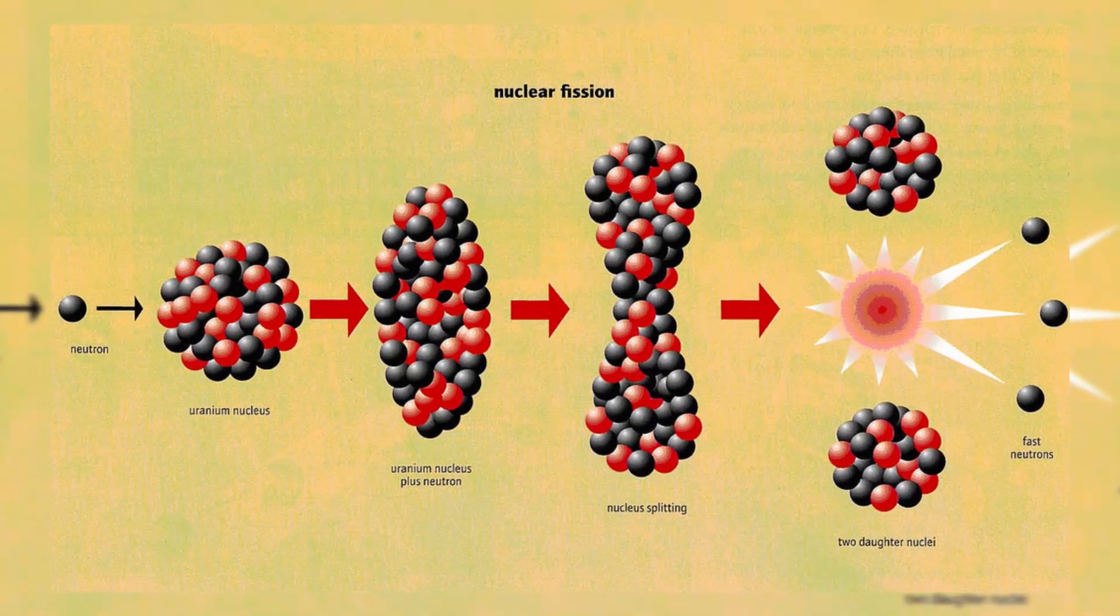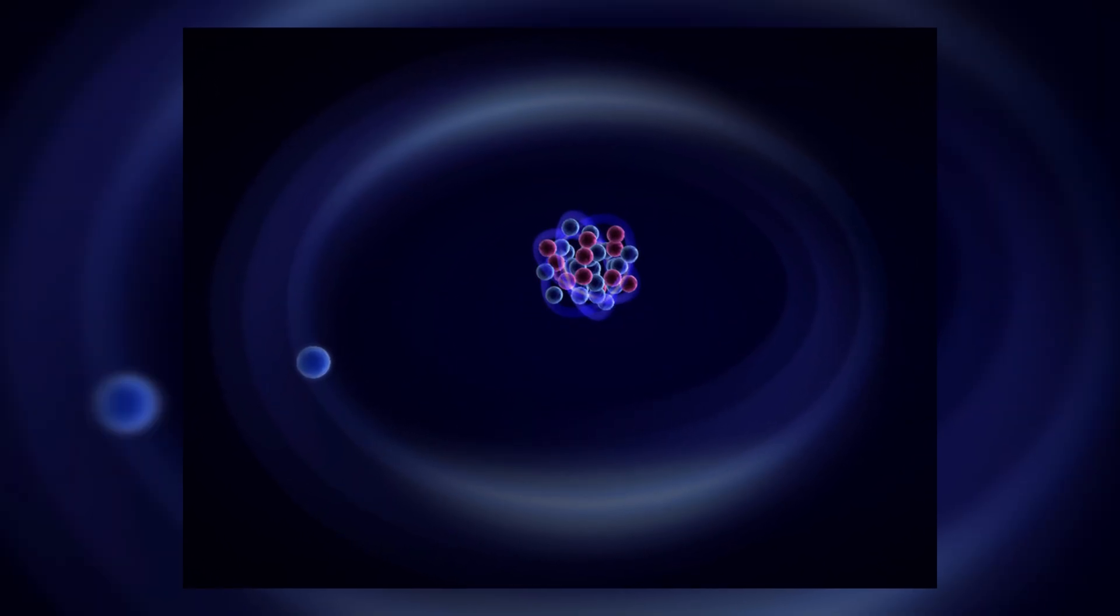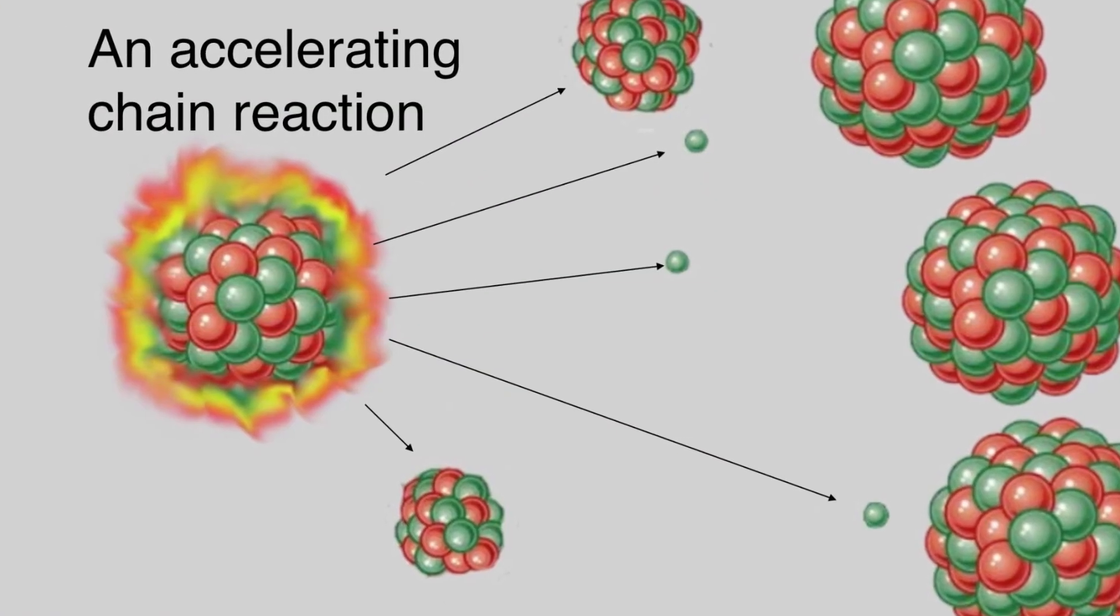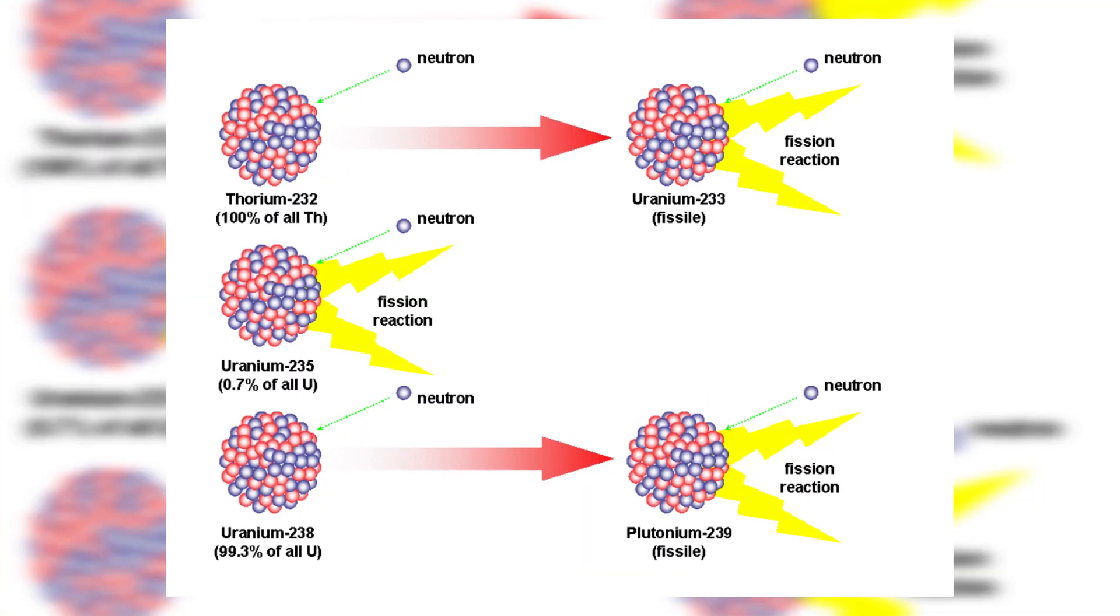Then, by firing atoms against others of the same isotope, you cause them to split, releasing neutrons which in turn collide with other atoms, continuing the reaction. Alternatively, you can fire subatomic particles like protons, neutrons, or alpha particles at the nucleus of the fissile isotope.